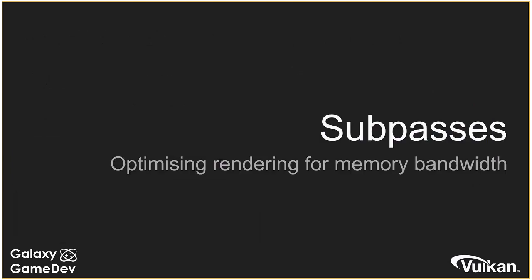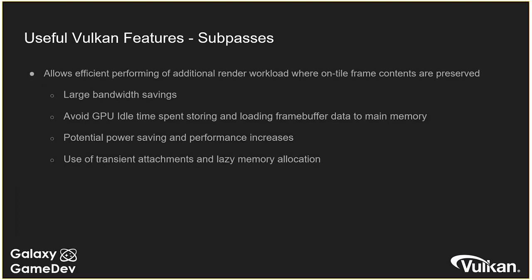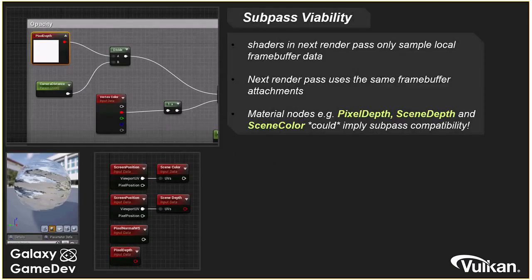The next topic is subpasses — something not many people are using yet but which becomes really relevant on mobile. When working on a tile-based architecture, memory bandwidth is a significant problem, and subpasses are a way to minimize it. Rather than writing data back to main memory and reading it in again, we can keep local data — depth information, normals, lighting — in tile memory throughout the rendering process. This can provide a significant increase in throughput, especially for heavy G-buffers and lots of pixel data.